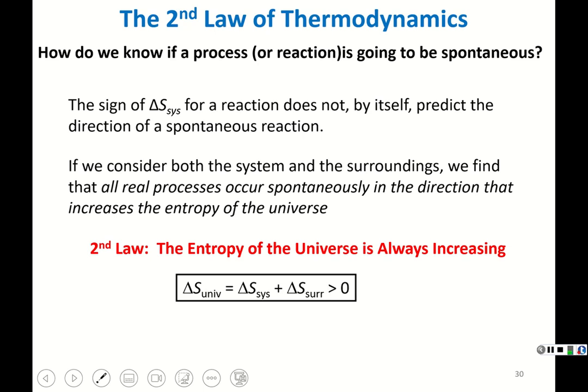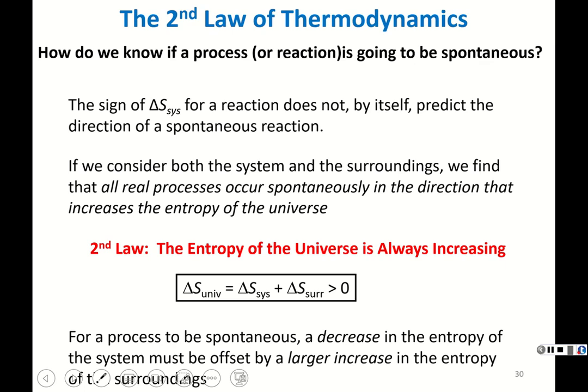Mathematically, the second law is written as: delta S_universe = delta S_system + delta S_surroundings > 0. Compare this to the first law where delta E_system + delta E_surroundings = 0. For the entropy, it must always be greater than zero. For a process to be spontaneous, a decrease in entropy of the system must be offset by a larger increase in entropy of the surroundings.